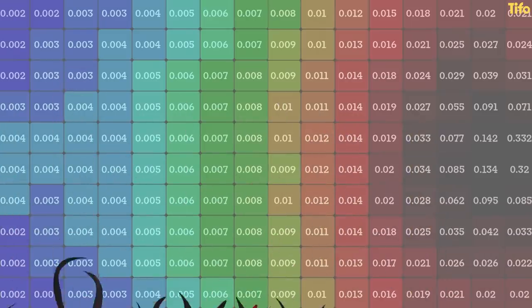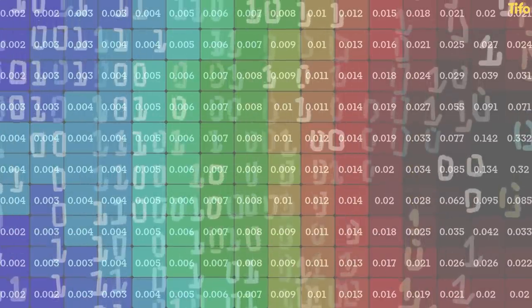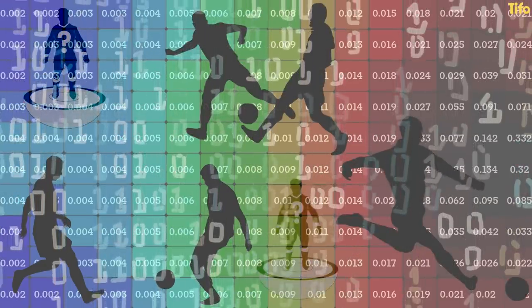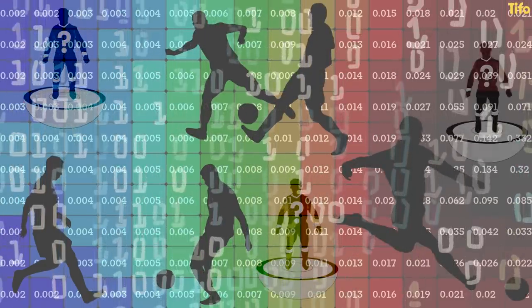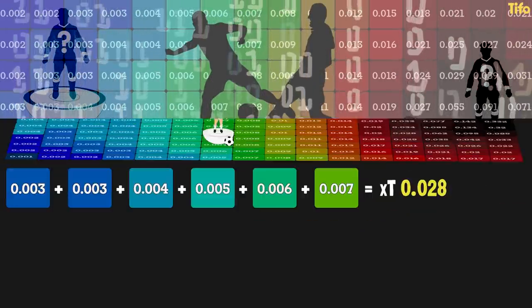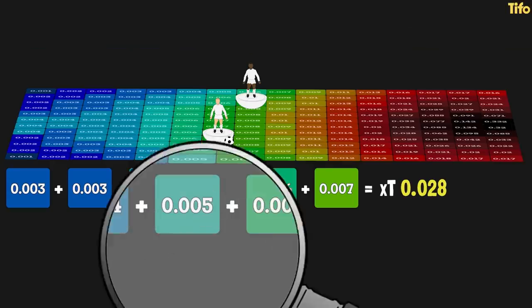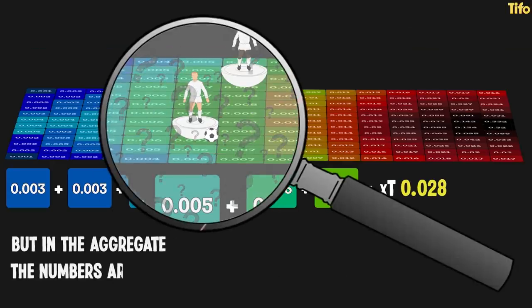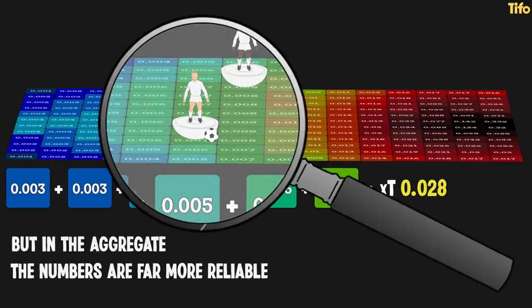It's worth a note here to say that this model is built on event data — passes, tackles, shots, etc. — but has no idea about the location of other players on the pitch. Looking at individual examples like the above may prompt a 'that doesn't look right' reaction, but in the aggregate, the numbers are far more reliable.